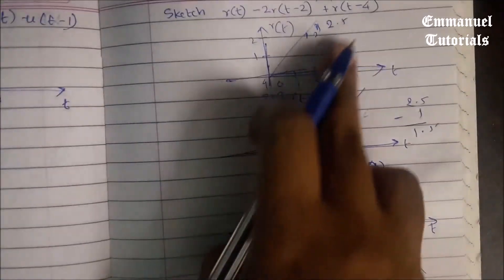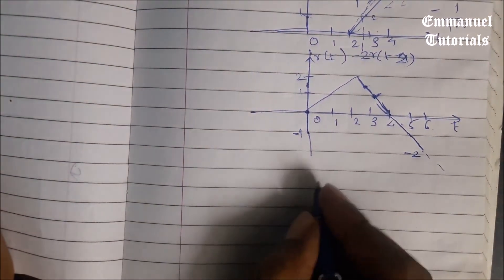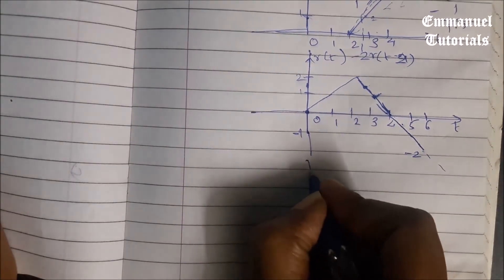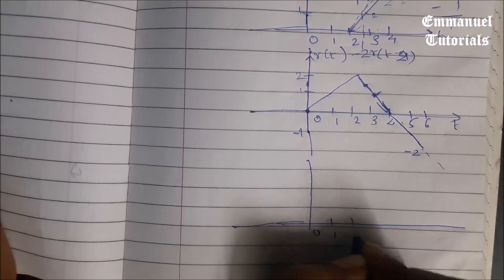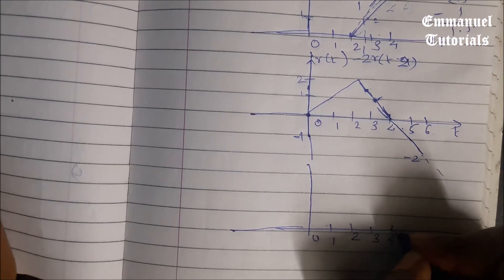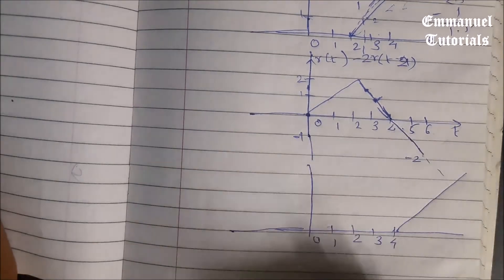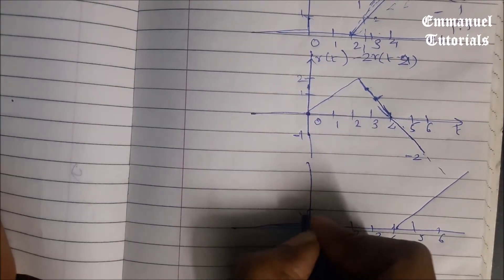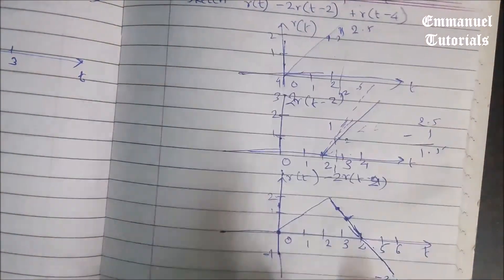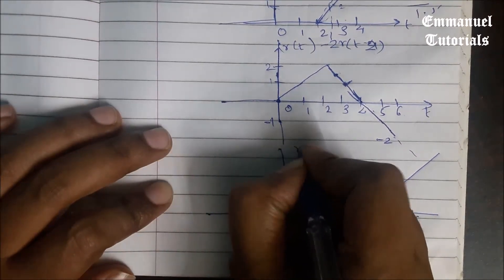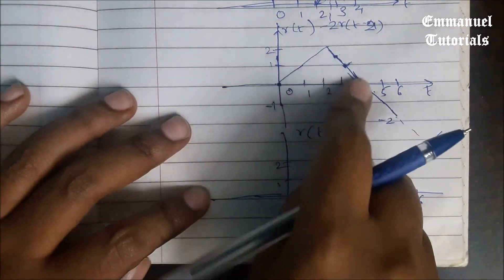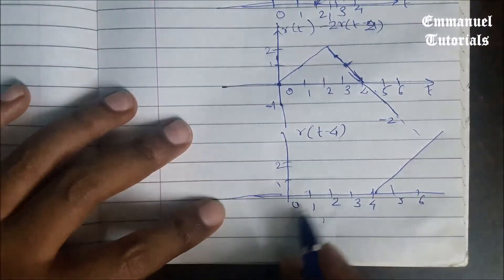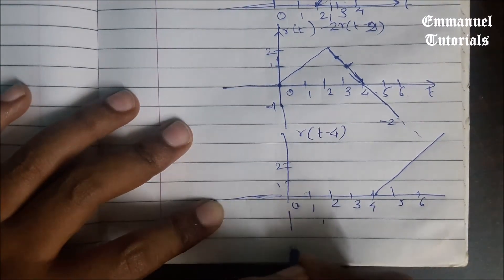Now let's go to the next part of the signal, r(t-4). R(t-4) is a delayed version of the ramp signal by 4. Our signal will start at t=4: at t=4 amplitude is 0, at t=5 amplitude is 1, at t=6 amplitude is 2, and so on. We now add this signal to the resultant we have so far. From t=0 to t=4, the amplitude of r(t-4) is 0, so adding 0 to anything keeps it the same.